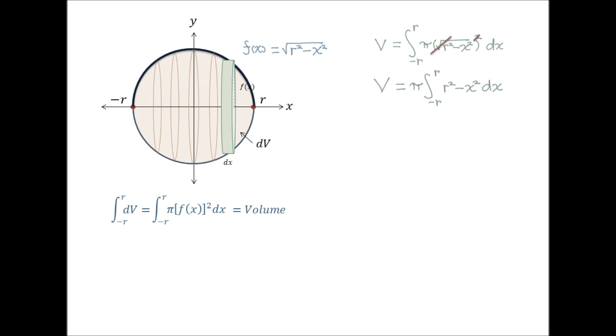And now we integrate the integral, and we get the quantity r squared x minus x cubed over 3 from r to negative r. Plugging in our limits, we then get the following.